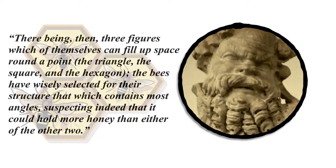He writes that there being three figures which of themselves can fill up space round a point — the triangle, the square, and the hexagon — the bees have wisely selected for their structure that which contains most angles, suspecting, indeed, that it could hold more honey than either of the other two.